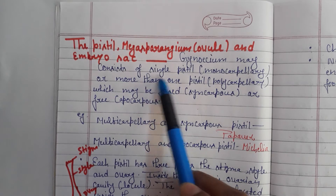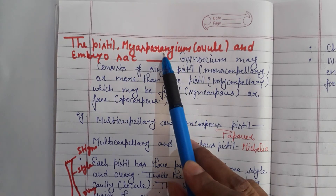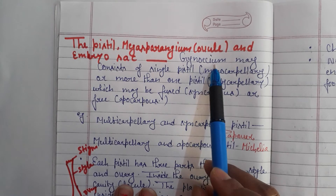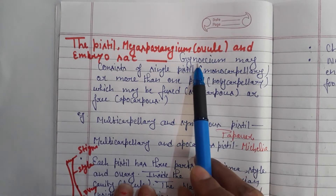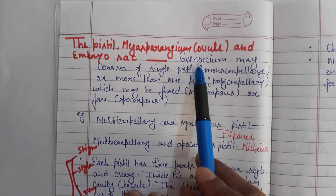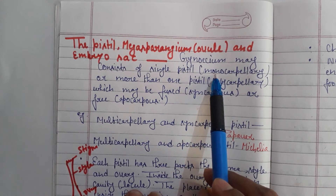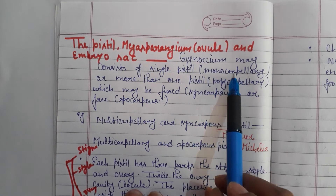The gynoecium may consist of a single pistil. The female part has three names: you can call it pistil, carpel, and megasporangium. If the gynoecium has one carpel, it is called monocarpillary.